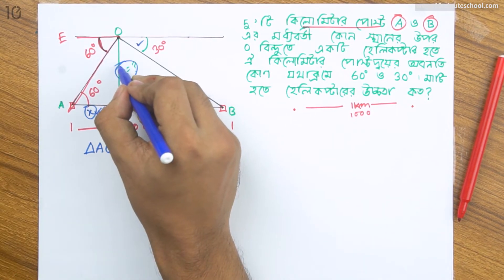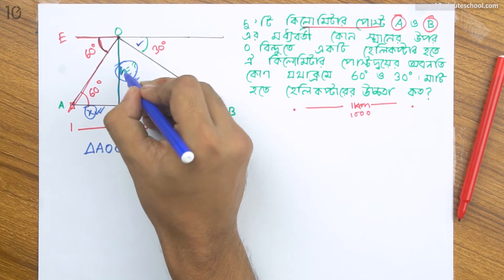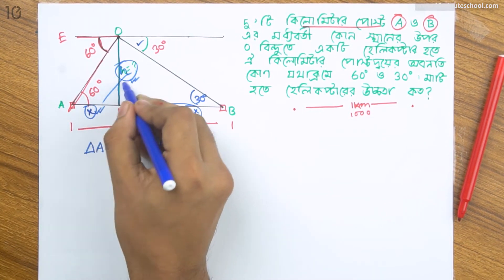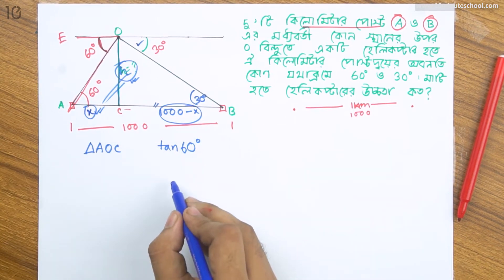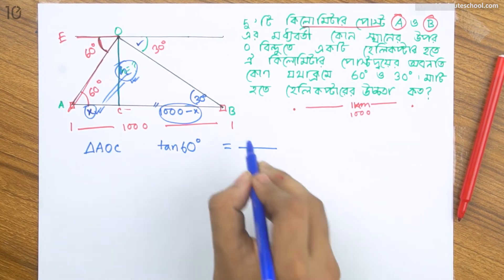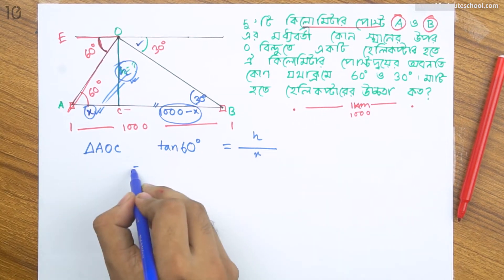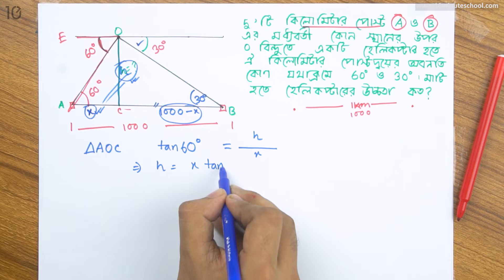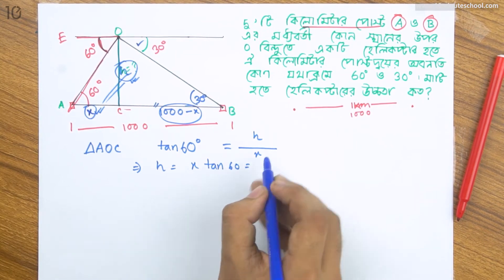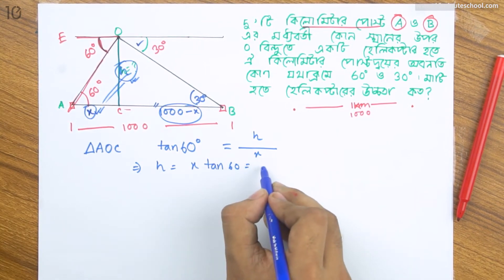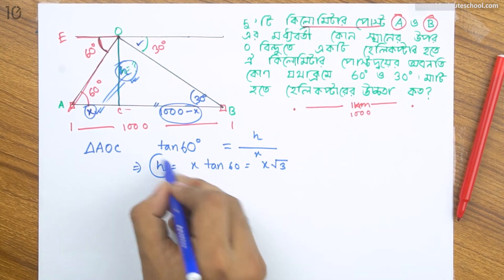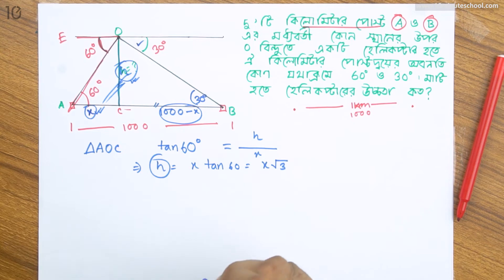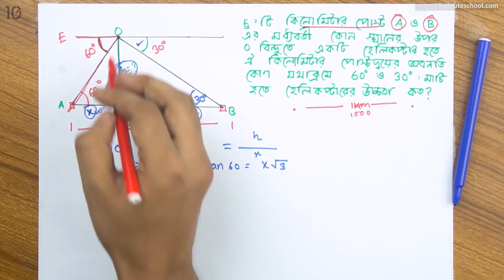1000 নেওয়ার কারণ হলো এই যে আমার লম্ব h এটা নয়। আমি একটা আইডিয়া করে ফেলো এবং এসি একটা 1000 সমান লম্ব ভূমি বা h সমান x·√3। তাহলে h সমান x·√3। তুমি h-এর মানটা এই আইডিয়া কোড করে ফেললা, x-এর মাধ্যমে প্রকাশ করে শিখে গেলা।